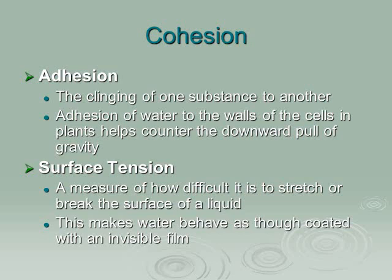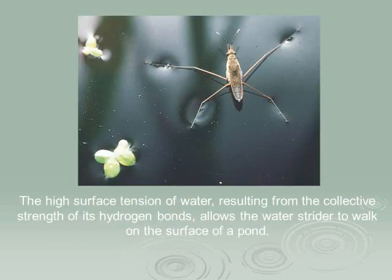Another example of surface tension: if you lay a needle sideways on top of water, it will stay there and not sink unless disturbed. A water strider is a great example — you'll see these in ponds and wetlands, and they basically scamper across the surface of water because of that surface tension.